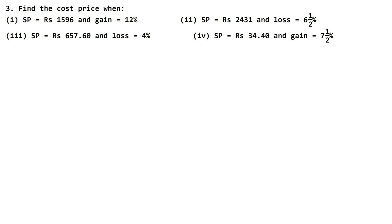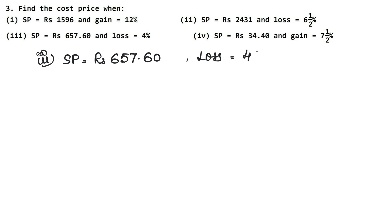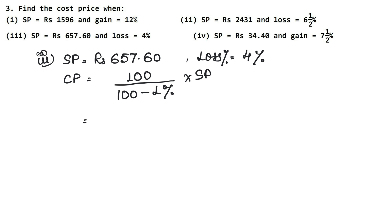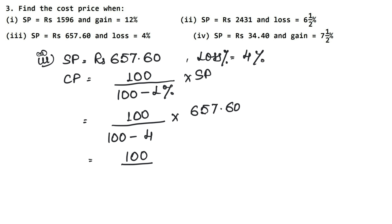Let's do the third part now. We are given selling price = Rs. 657.60 and loss percentage = 4%. We need to find CP. The formula is: CP = 100 upon (100 minus loss percent) into SP. So: 100 upon (100 minus 4) into 657.60, which gives 100 upon 96 into 657.60. Since there is a decimal point with 2 values after it, we multiply by 100 to remove the decimal.